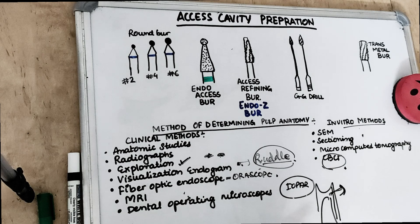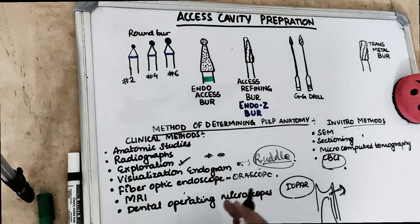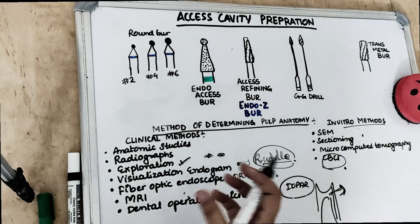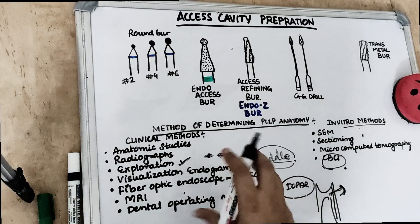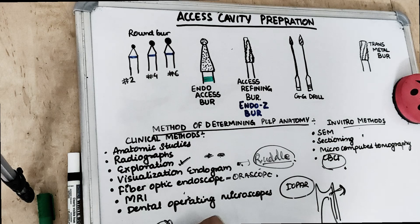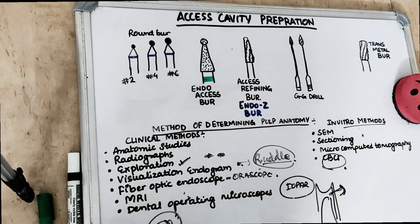Some endodontists use magnifying loupes, which have magnifying glasses attached to spectacle frames to provide an enlarged view — up to 5x zoom — allowing visualization of all canal anatomy. However, these are expensive and not accessible to everyone.